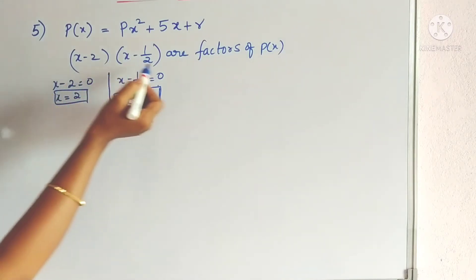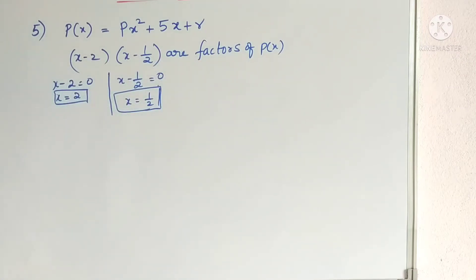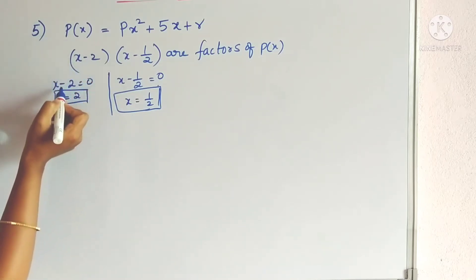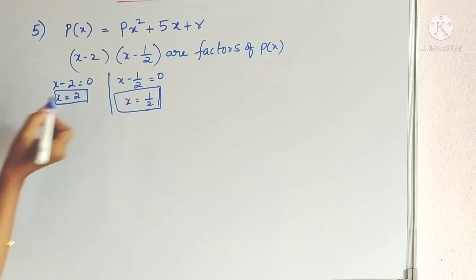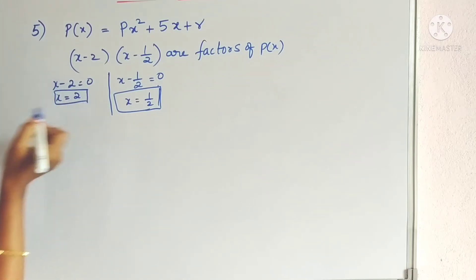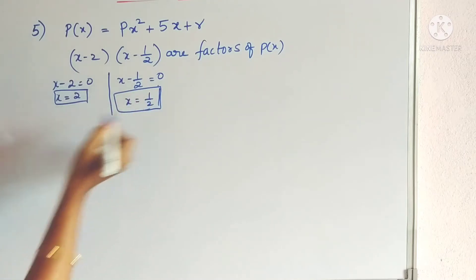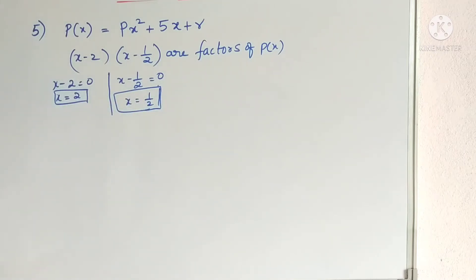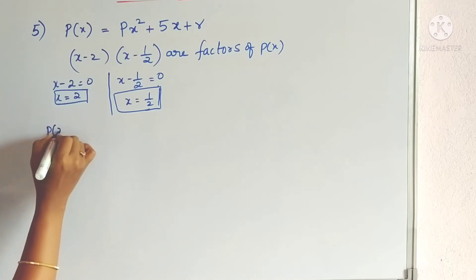Since (x minus 2) and (x minus half) are factors of p(x), we have to find the remainder first. We take x minus 2 and equalize to zero, so x equals 2. And x minus half equals zero gives x equals half.